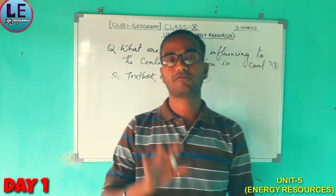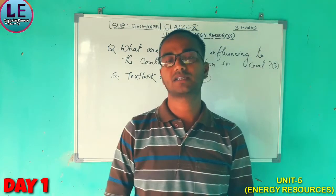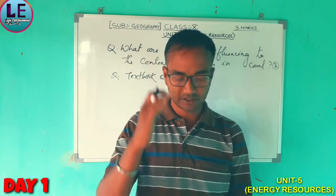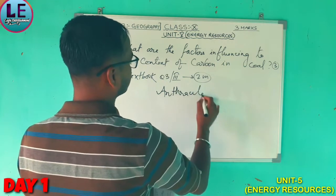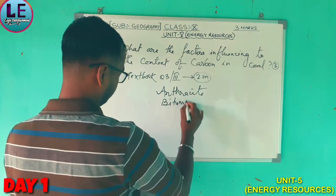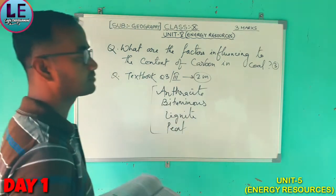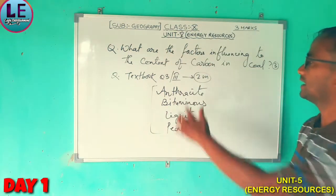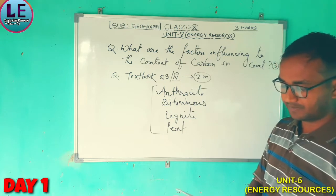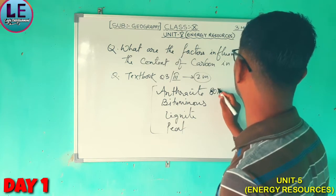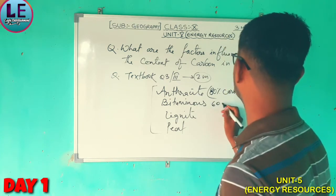Coal is of four types. In India, there is 80% carbon in the highest grade. In the next grade, it is 60 to 80% carbon. The lowest grade of coal contains around 50% carbon.